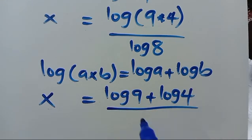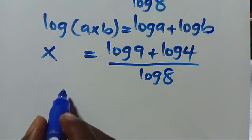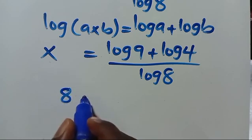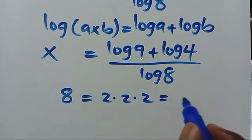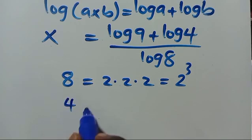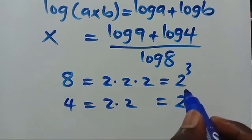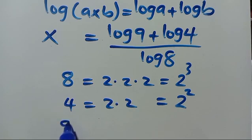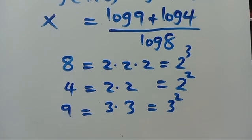We recall that 8 equals 2 × 2 × 2, which is 2 to the power of 3. We also have 4 equals 2 × 2, which is 2 to the power of 2. And 9 equals 3 × 3, which is 3 to the power of 2. Let us substitute everything.